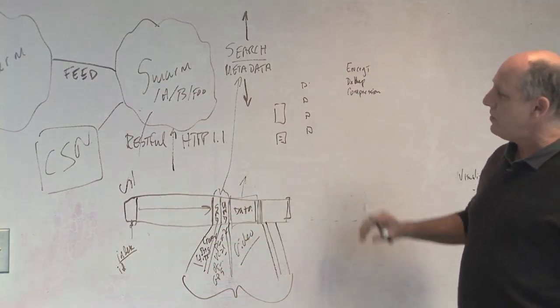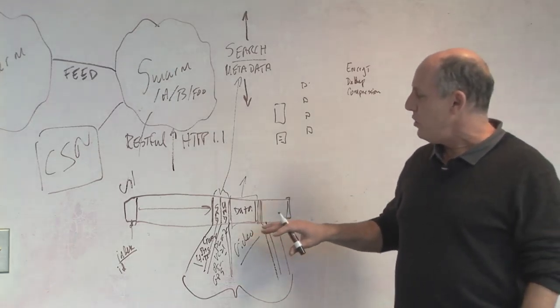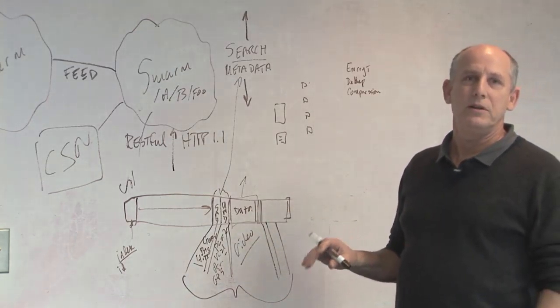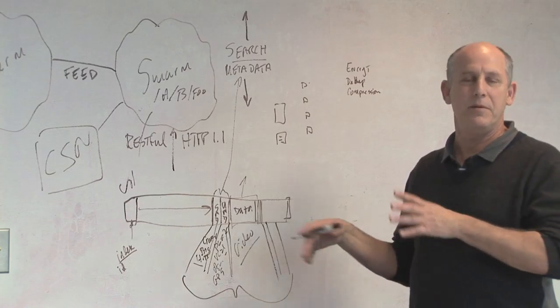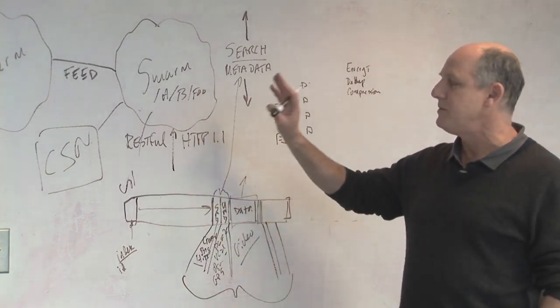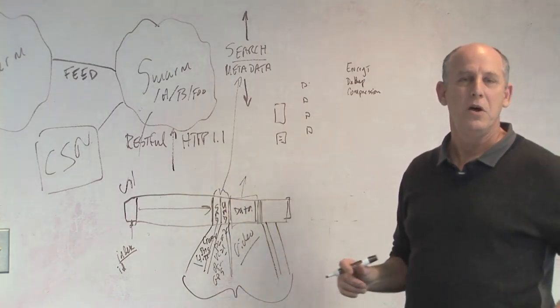And from the compression point of view, you can easily do compression in line with this. So you could easily use PK-Zip, compress it in line and then read the same object through a browser and it would decompress.